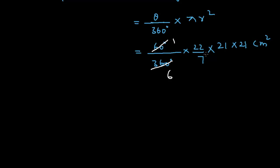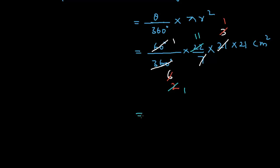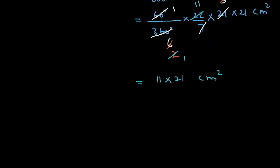Simplifying: 7 times 3 is 21, 3 times 2 is 6, and 60 divides into 360 six times. We are left with 11 times 21 centimeter square, which means 231 centimeter square. So the area of the sector is 231 cm².